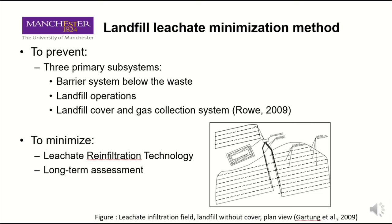Here is the landfill leachate minimization method. There are two main aspects against the pollution: one is to prevent beforehand, and the next is to minimize after the pollution exists. To prevent, there are three primary subsystems: the barrier system below the waste using impermeable materials, landfill operations, and also the landfill cover and gas collection system, which is one of the most important parts. To minimize, people are using leachate recirculation technology, which is one of the most economical technologies in recent years, as shown in the graphs. Also, long-term assessment involves monitoring the whole system and landfill site over a long period of time to prevent pollution.